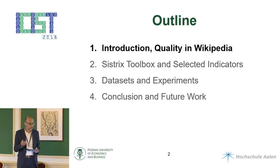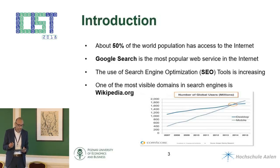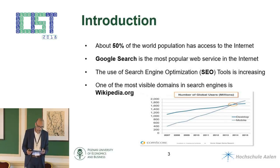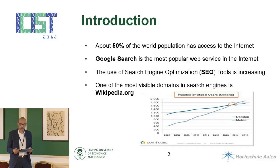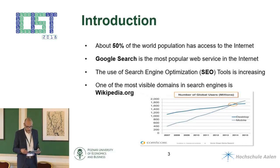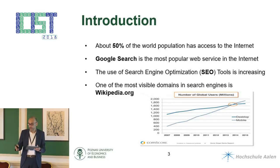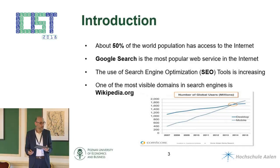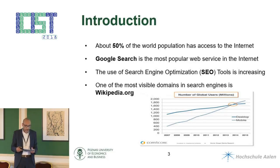50% of the world population is almost using internet services, and everybody knows the most important service is Google Search. Connected with Google Search, we have a lot of new tools which assist digital marketing and digital activities on the internet. We also have a lot of visible domains in the search engine results — so-called SERPs — and one of the most important domains everybody knows is wikipedia.org.